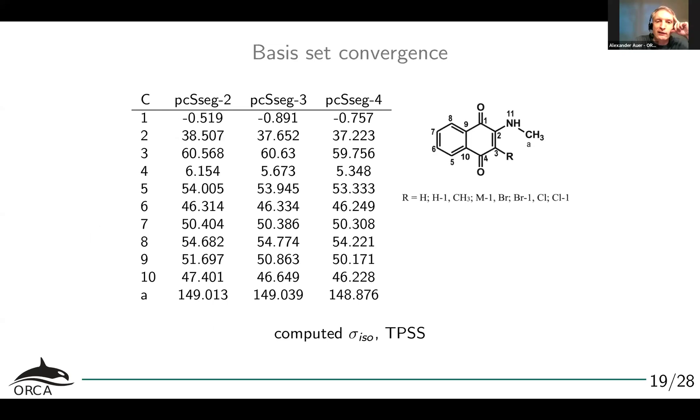What are the results? First of all, let's look at the basis set convergence. This is all with TPSS. If I look at the carbon chemical shifts, what we see is that going from PCSSEC-2 to PCSSEC-4, the results only change by less than one ppm. This is really nice. It shows us that if we look at the PCSSEC-2 basis set, we will likely not be off by more than one ppm. So this gives us a lot of confidence in using PCSSEC-2.